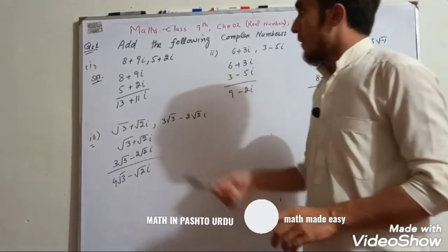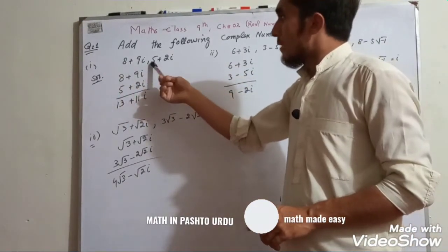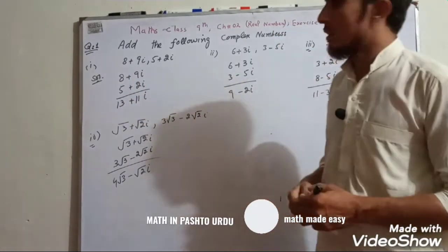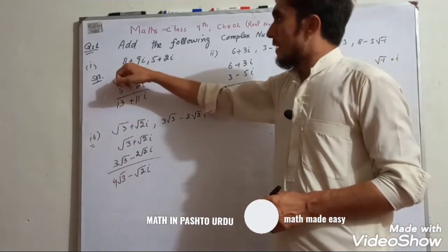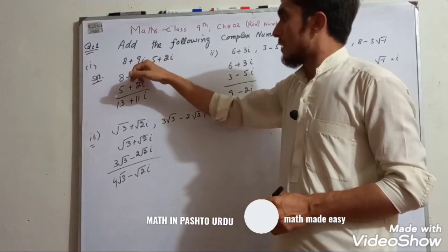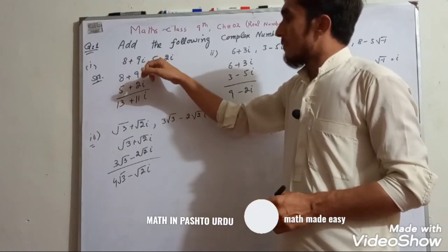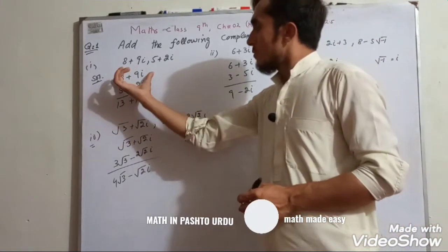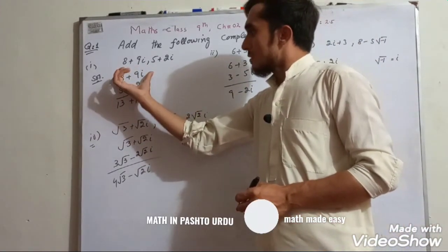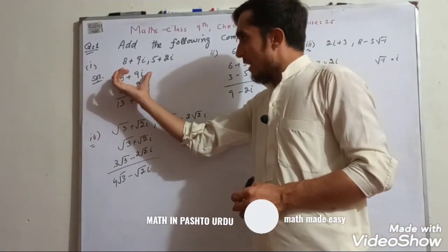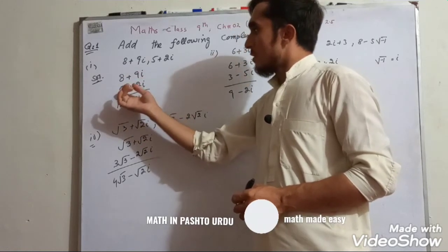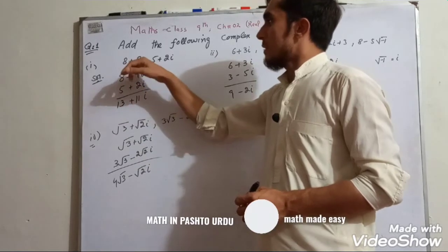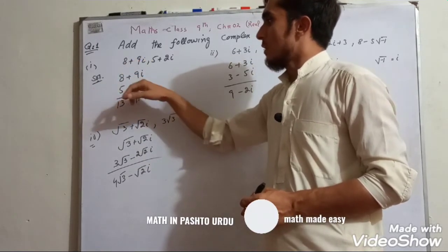We will add real part with real part and imaginary part with imaginary part. The real part and imaginary part are identified. First: 8 plus 9 iota. Secondly: 5 plus 9 iota. So 1 plus 9 iota, giving 12 iota.